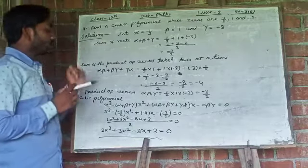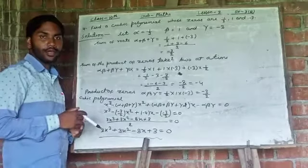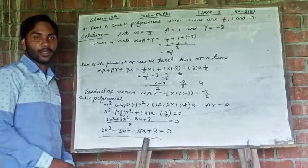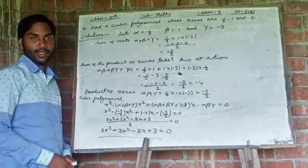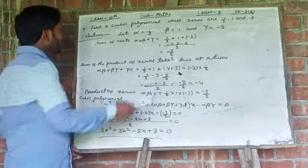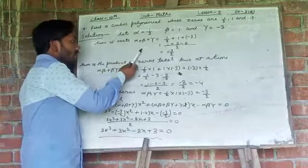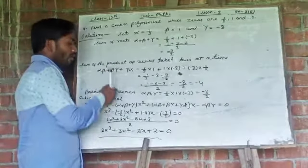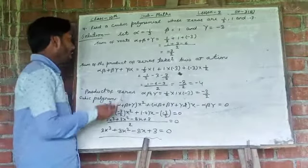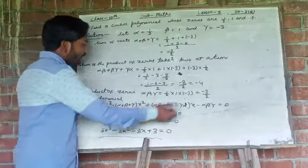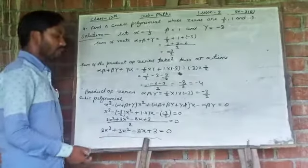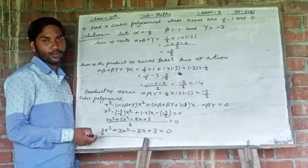So by using these steps, you can easily find out the cubic polynomial by its zeros. If directly sum of zeros are given, sum of product of zeros and sum of the product of zeros taken 2 at a time, then you can apply this formula directly and you can find out the cubic polynomial.